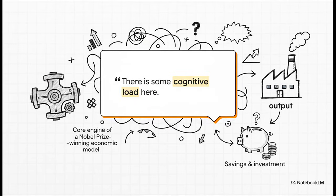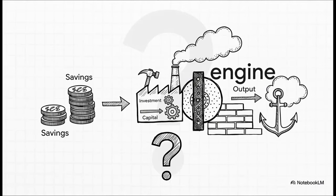As the lecturer who inspired this explainer said himself, it is totally normal if this feels like a lot to take in at once — there's some real cognitive load here. We've successfully built our engine of growth: savings becomes investment, investment builds more capital, and more capital leads to more output. But if that was the whole story, shouldn't economies just grow forever and ever? We know they don't. So that leaves us with one final fascinating question: what puts the brakes on this powerful engine? And we'll dig into that next time.